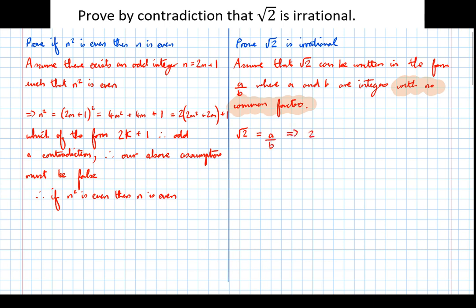And that means that 2 equals a squared over b squared. I square both sides. And that means that a squared equals 2b squared. Now notice here that if a squared is 2 times another number then it must be even. So a squared equals 2 times something, therefore a squared must be even.